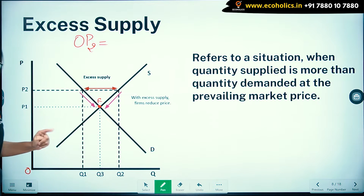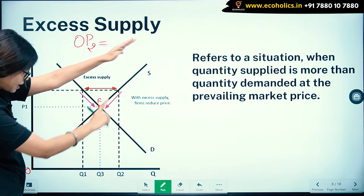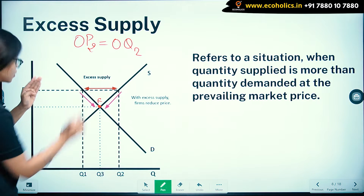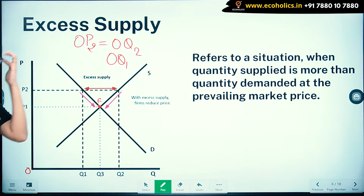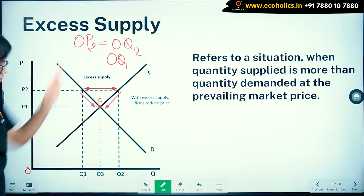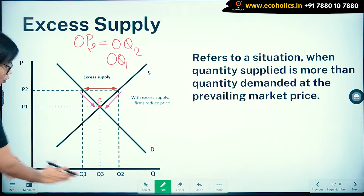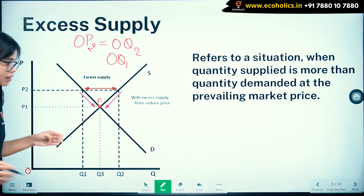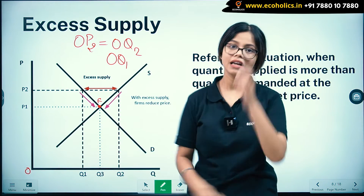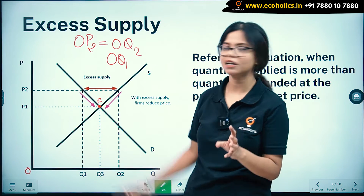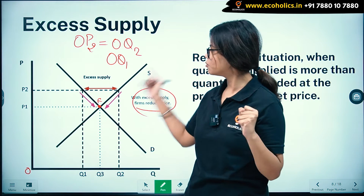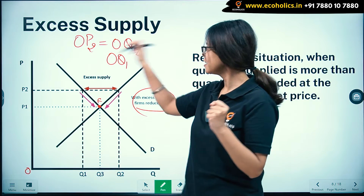Supply is more at OQ2 as shown on the supply curve, and demand is less at OQ1 as shown on the demand curve. At price OP2, you can clearly see there is more supply OQ2 and less demand OQ1. Because there is excess stock with the producers, they will reduce the price and it will again settle at equilibrium price P1.